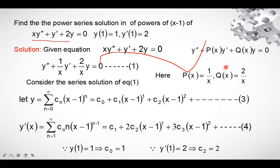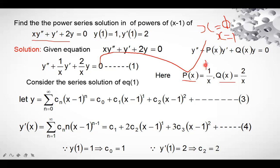The given point is x − 1 = 0, so x = 1. We check whether x = 1 is an ordinary point by substituting x = 1 into P(x) and Q(x). We get P(1) = 1/1 = 1, a constant, and Q(1) = 2/1 = 2, also a constant. Therefore, the given point x = 1 is an ordinary point, and we continue the procedure.